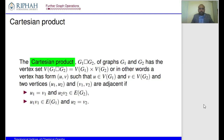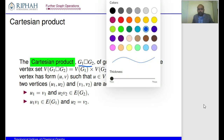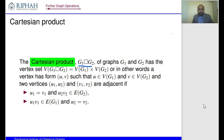Our first graph operation is a binary operation: the Cartesian product. The Cartesian product of graphs G1 and G2 is denoted as G1 □ G2. The vertex set of this Cartesian product is obtained by the vertex set of G1 cross the vertex set of G2. In other words, the vertices in the Cartesian product are ordered pairs where the first component belongs to G1 and the second component belongs to G2.